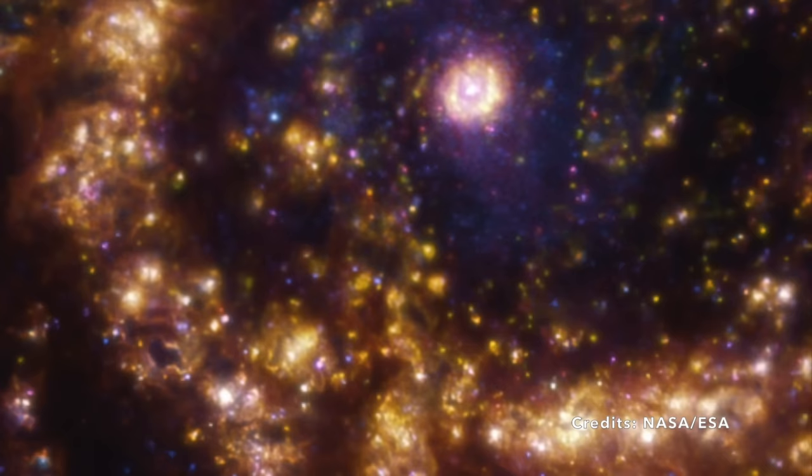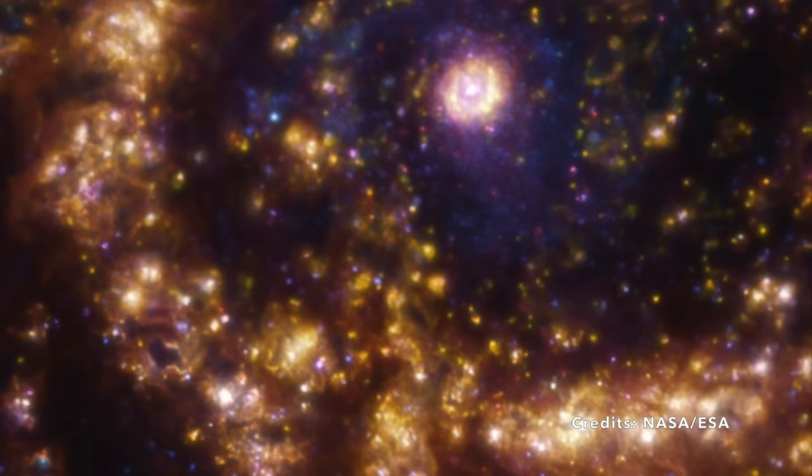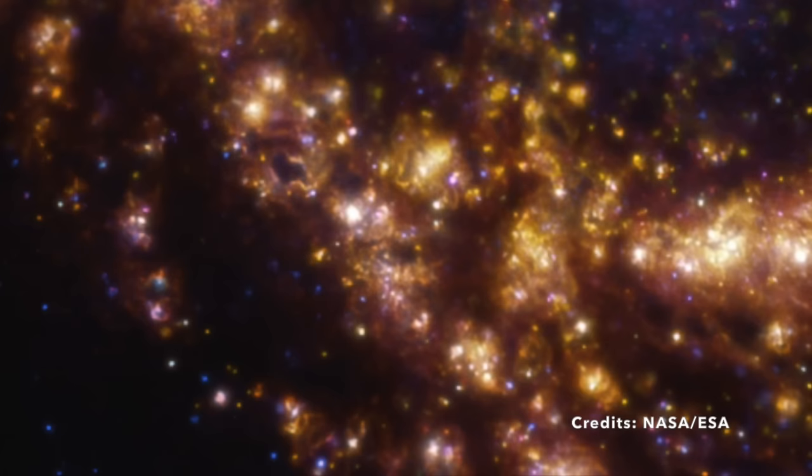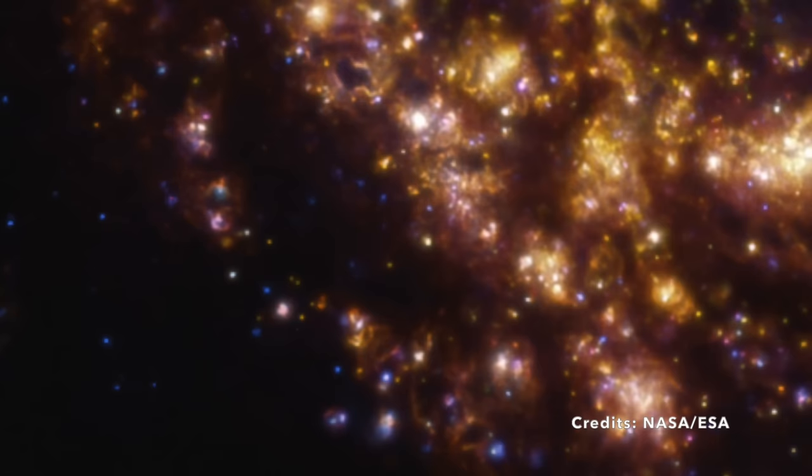This very radiation then warms and ionizes—adds or removes electrons to or from atoms—the surrounding gas. And this ionized gas doesn't stay silent. It glows brilliantly, heralding the birth of new stars. In the image of Messier 61, this radiance takes on a hue that can be likened to a golden whirlpool.